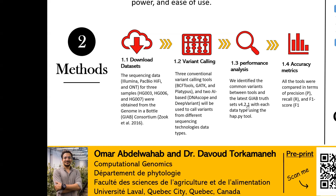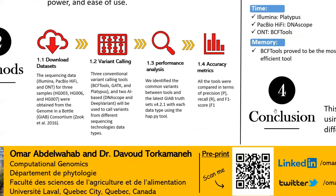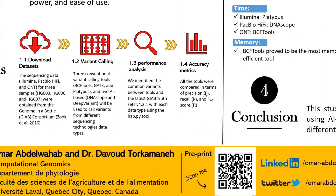We compared the produced VCF files with the latest GIAB truth sets, version 4.2.1, using a tool named Hap.py. For each file, we report the precision, recall, and F1 score of the produced variants as accuracy metrics.